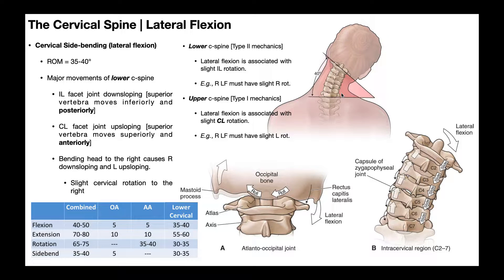We can consider what this does to the facet joints. On the ipsilateral side — in this example, the right side — the facets are down-sloping, moving into their closed-packed position as they come closer together. Down-sloping means the superior vertebra moves inferiorly and posteriorly relative to the vertebra below. So at the C3-C4 segment on the right, C3 glides inferiorly and posteriorly relative to C4.